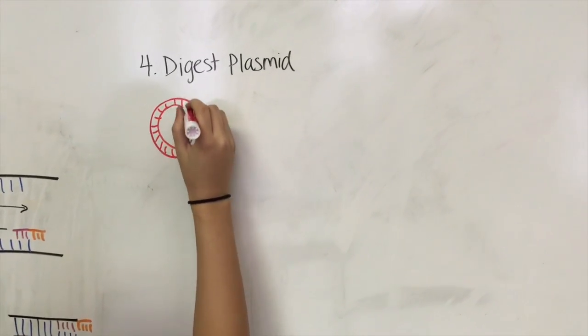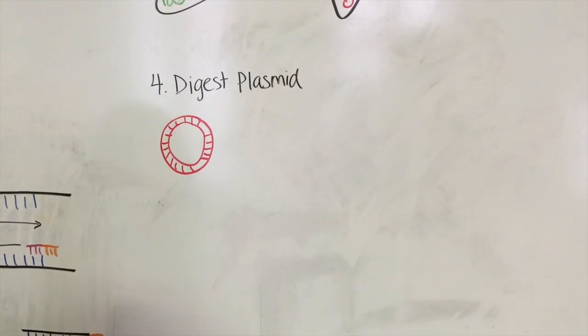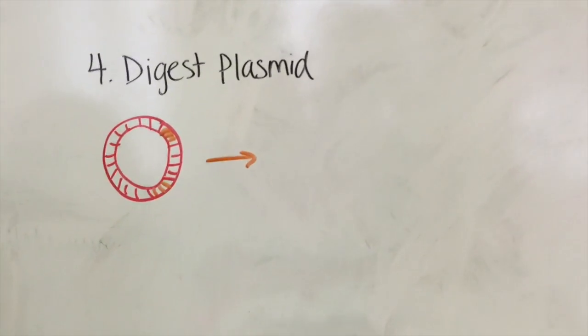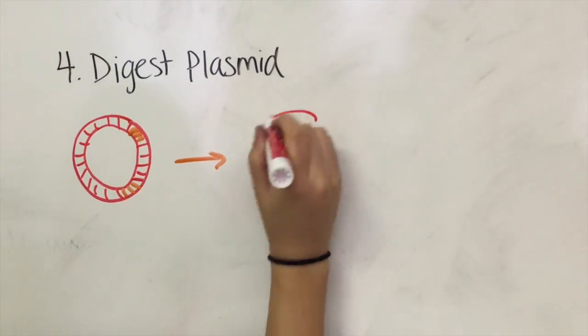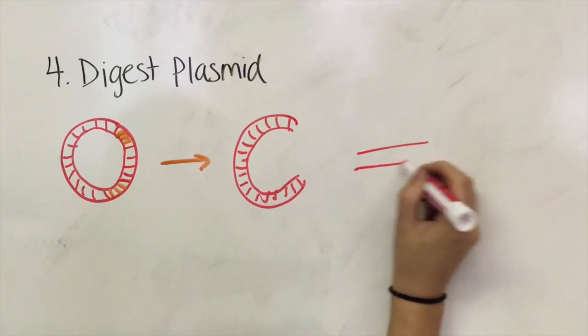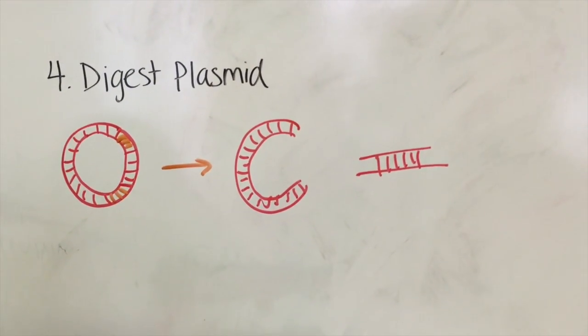Note that the restriction enzymes should cut at sites that match the restriction enzyme sites of the isolated gene. If you directly use restriction enzymes to cut the gene out of the DNA, you should use the same restriction enzymes with the plasmid. If you use PCR, the restriction enzymes for the plasmid digest should cut at sequences that match the primers sequences.